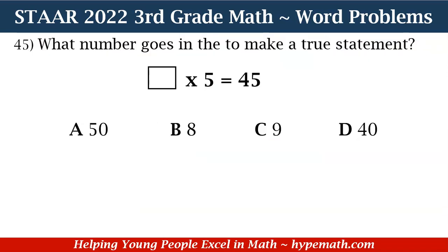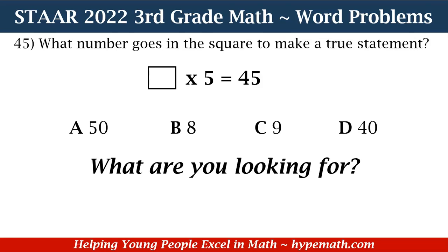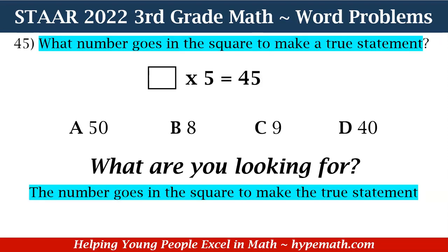What number goes in the square to make a true statement? We see a square and it says: square times 5 equals 45. Is it A: 50, B: 8, C: 9, or D: 40? In order to solve this problem, we ask ourselves: what are we looking for? We are looking for the number that goes in the square to make the statement true.